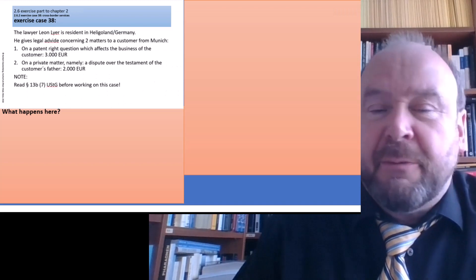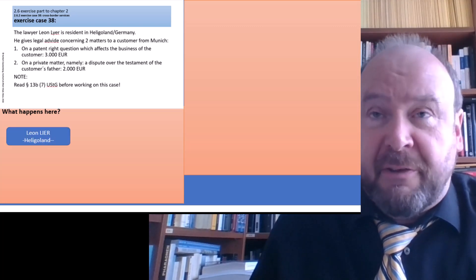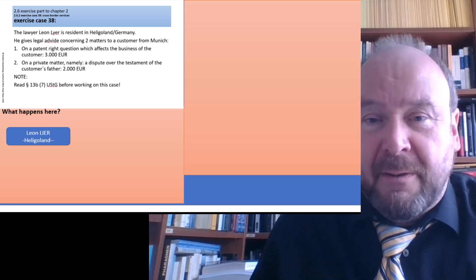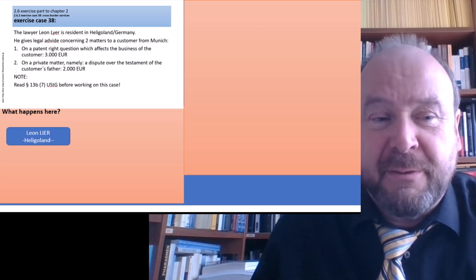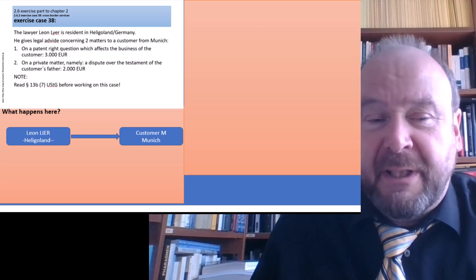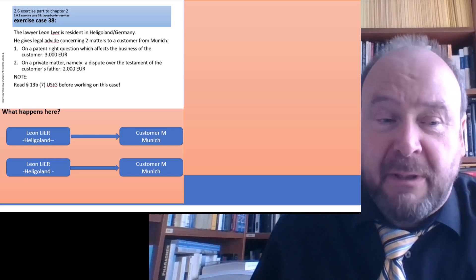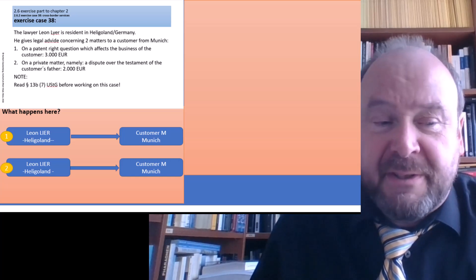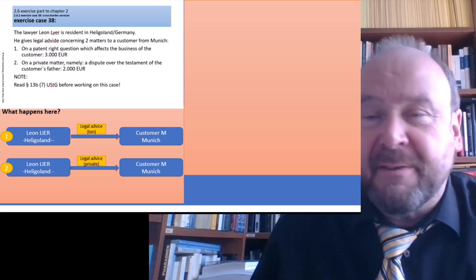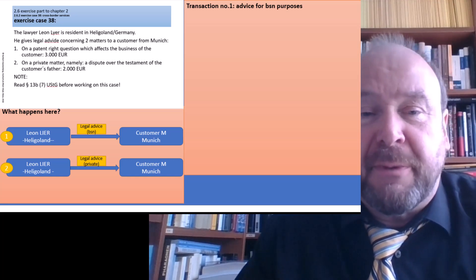The first thing we ask ourselves is what happens here. We potentially have two transactions, because this is not a uniform transaction — an average customer could ask two different lawyers for each piece of advice, so it's separable. Leon Leier from Heligoland gives advice to the customer in Munich twice, but these are different pieces of advice: the first is business advice, the second is private advice — which justifies different treatment.